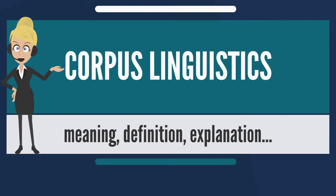Besides corpora of living languages, computerized corpora have also been made of ancient language texts. An example is the Andersen-Forbes database of the Hebrew Bible, developed since the 1970s, in which every clause is parsed using graphs representing up to seven levels of syntax and every segment tagged with seven fields of information. The Quranic Arabic Corpus is an annotated corpus for the classical Arabic of the Quran, featuring morphological segmentation, part-of-speech tagging, and syntactic analysis using dependency grammar.